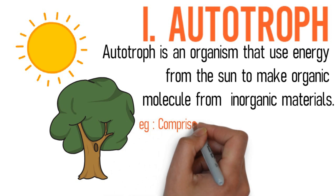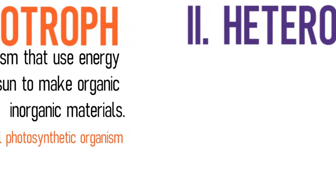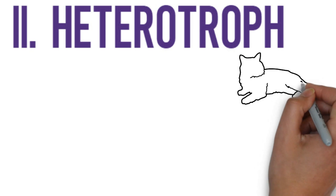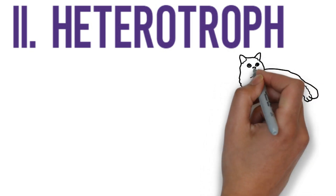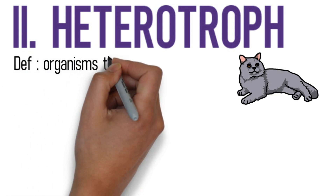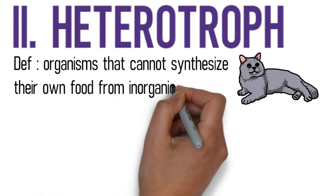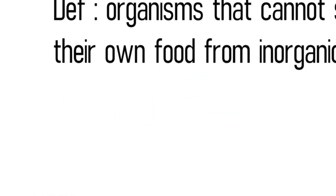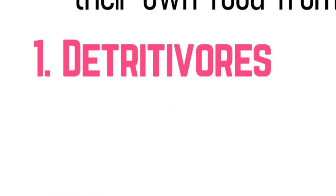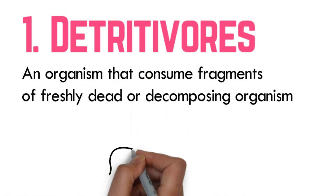The second type of biotic component is heterotroph. A heterotroph is a consumer — an organism that cannot synthesize its own food from inorganic materials. It can be divided into four types. The first is detrivore. A detrivore is an organism that consumes fragments of freshly dead or decomposing organisms; it is usually a primary consumer, and examples include earthworm and crab.